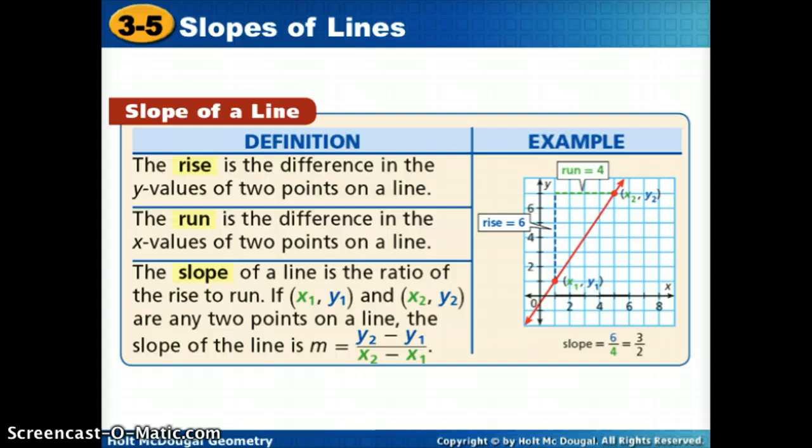We talk about slope as rise over run. We need to know that rise is the difference in our y values, so this blue on our picture. And run is the difference in our x values. So vertical change over horizontal change is what will give us the slope or the ratio of rise over run.